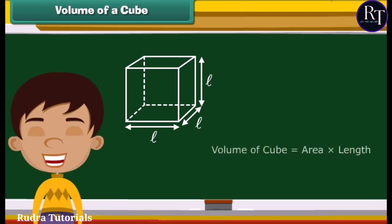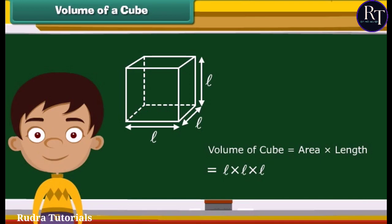To find the volume of the cube, we just need to multiply the area A with L. Hence, by multiplying these three L's together, we get L cube. Therefore, the formula for the volume of a cube is L cube.